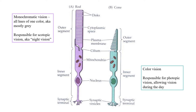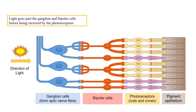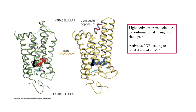Cones are used for processing color vision, while rods are used for processing monochromatic vision. Connected to each cone and rod are cells called bipolar cells, followed by cells called ganglion cells. Inside rod cells, there are molecules called rhodopsin, which is a G protein-coupled receptor, or GPCR — important proteins that can detect molecules and send cellular signals in response.